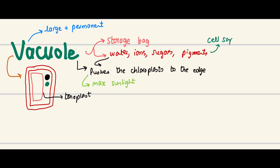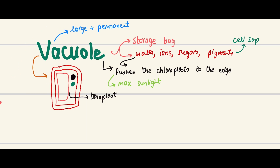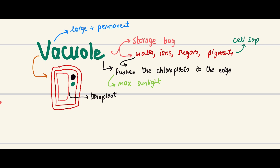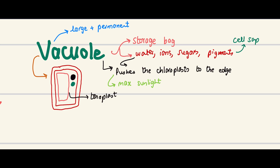The contents of the vacuole — water, ions, sugars, and pigments — are collectively called cell sap. Examiners may ask you to name the structure, name its membrane (tonoplast), identify the fluid inside (cell sap), give its composition, and state its purpose: storage, and pushing chloroplasts to the edge for maximum light. These questions are easy marks and quite common in past papers.